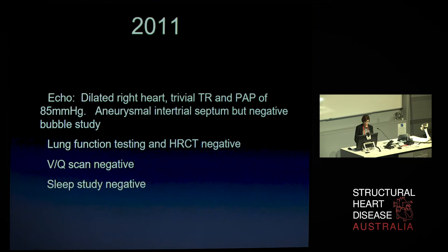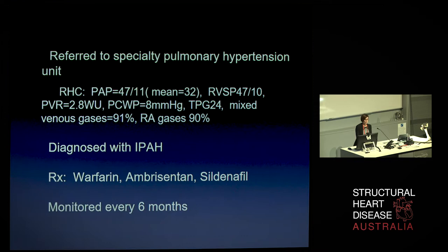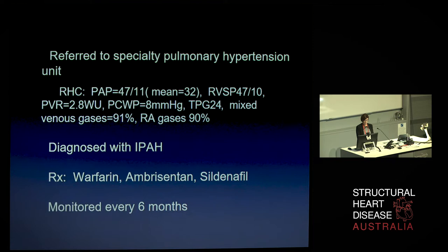She was referred to a specialty pulmonary hypertension unit where she had a right heart catheter performed, and she was found to have a mean pulmonary artery pressure of 32 mmHg, pulmonary vascular resistance of 2.8 wood units, pulmonary capillary wedge pressure of 8 mmHg, and mixed venous gases of 91% and right atrial gases of 90%. She was diagnosed with idiopathic pulmonary hypertension and treated with warfarin, ambrisentan, and sildenafil, and monitored every six months.